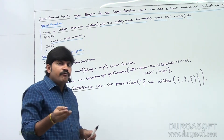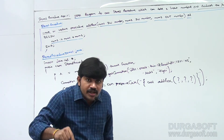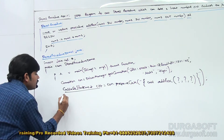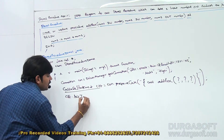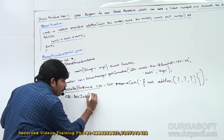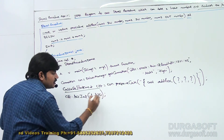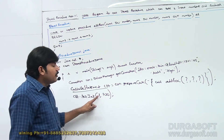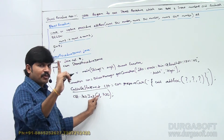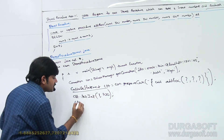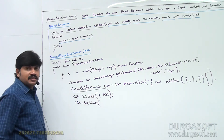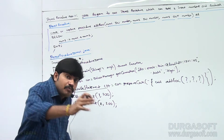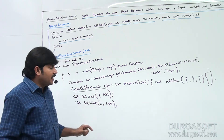Once we create the CallableStatement, for every IN parameter we must provide input values. There are two IN parameters: num1 and num2. So: cst.setInt(1, 100) — set the value 100 at the first index (first IN parameter). Then: cst.setInt(2, 200) — provide 200 as the input value for the IN parameter at the second index.